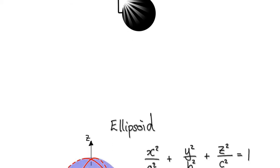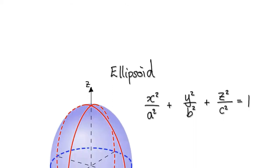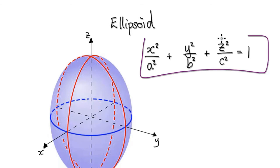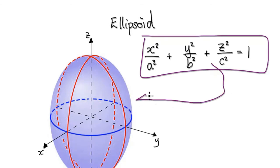In this video, we're going to try and understand why an equation of this form would give us a surface looking like this.